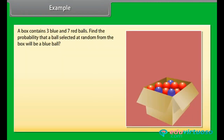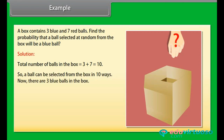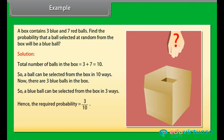A box contains 3 blue and 7 red balls. Find the probability that a ball selected at random from the box will be a blue ball. Solution: Total number of balls in the box is equal to 3 plus 7, which equals 10. So a ball can be selected from the box in 10 ways. There are 3 blue balls in the box, so a blue ball can be selected in 3 ways. Hence, the required probability is equal to 3 by 10.